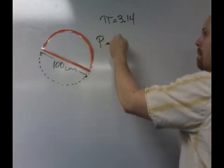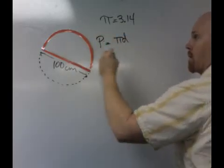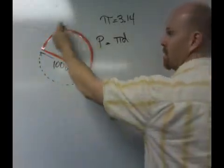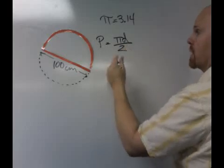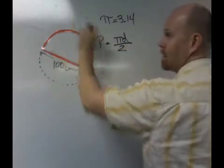And so what we've learned is the perimeter of this is pi times diameter. That would give us the entire circle, but then we're going to divide by two because we only want the semicircle.